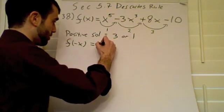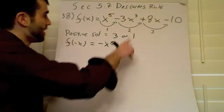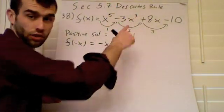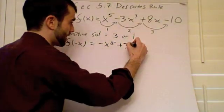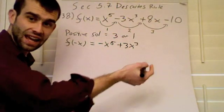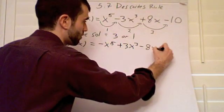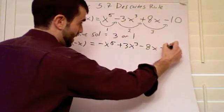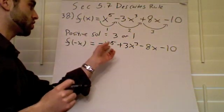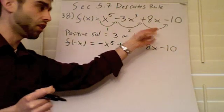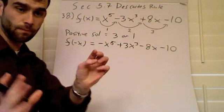So we'll just change the signs in front of any time we have an odd number exponent. x to the 5th is odd, so now it's negative x to the 5th. Negative 3x to the 3rd is odd, so instead of negative 3x to the 3rd, it's plus 3x to the 3rd. 8x is x to the 1st, so that's odd. So that's going to be negative 8x. And then minus 10. Keep that. Notice we have to change the sign on all three of these because they all have odd powers. If we had a squared term, you'd leave the sign the same.